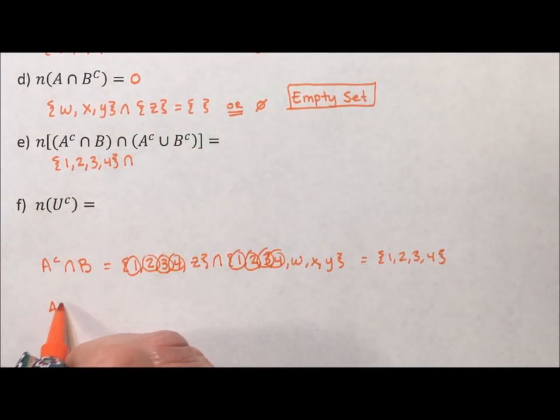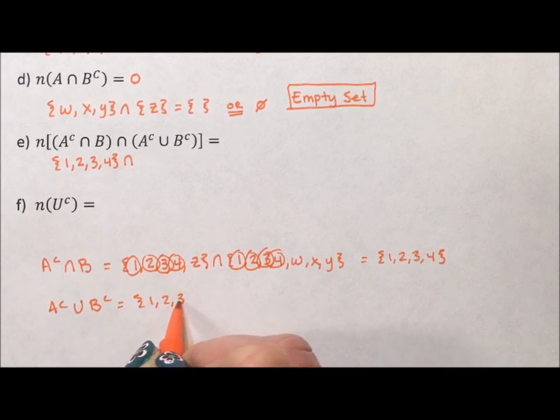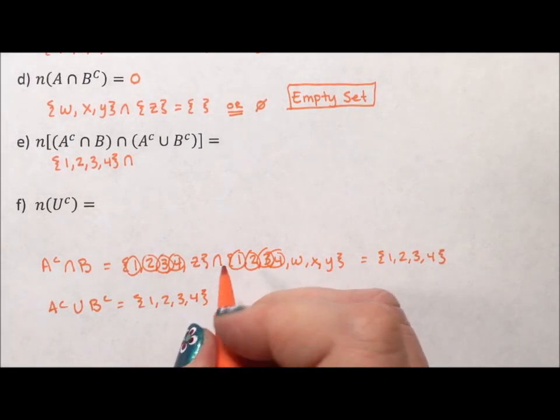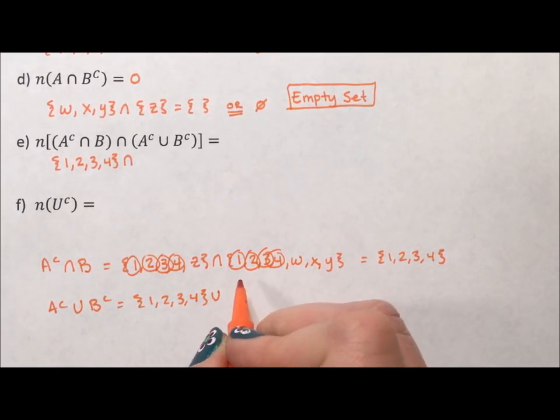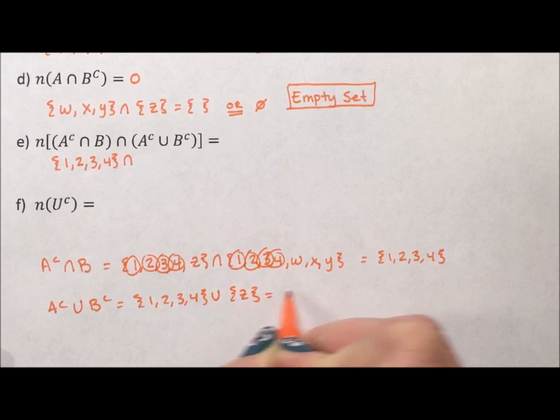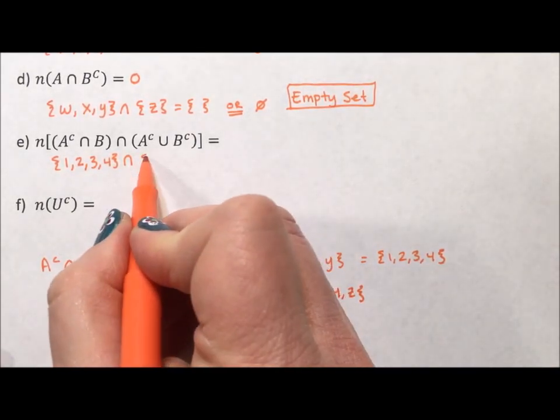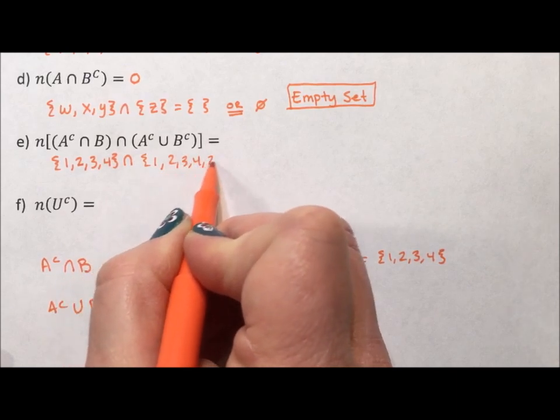All right. So, now we need A complement union B complement. Well, A complement is still 1, 2, 3, 4. And we want the union of that with B complement. B complement is Z. So that's going to be, union means putting it all together, 1, 2, 3, 4, Z. So when we put this together, we have 1, 2, 3, 4, Z.